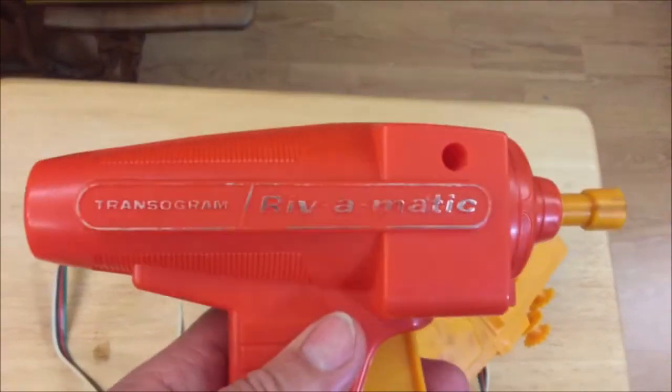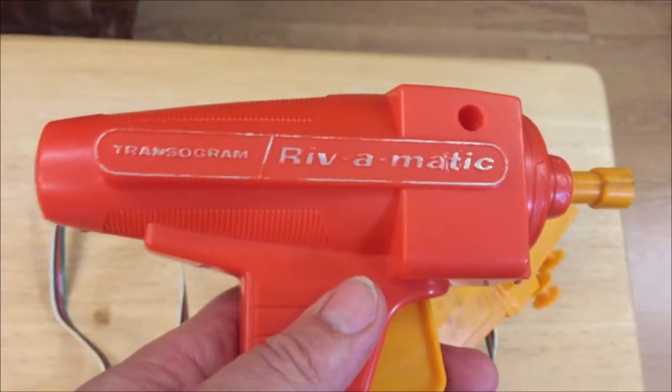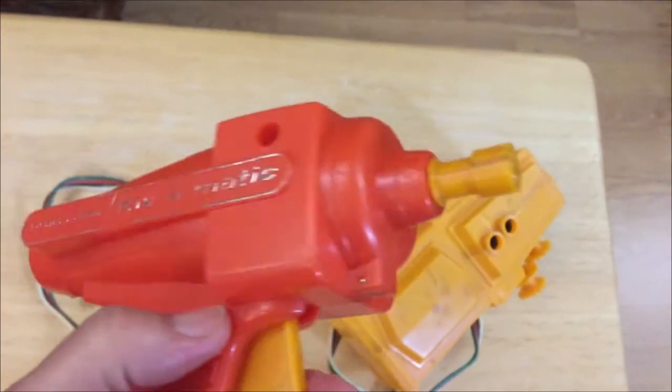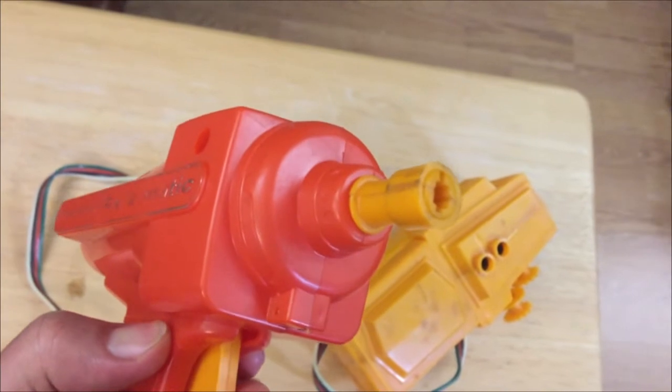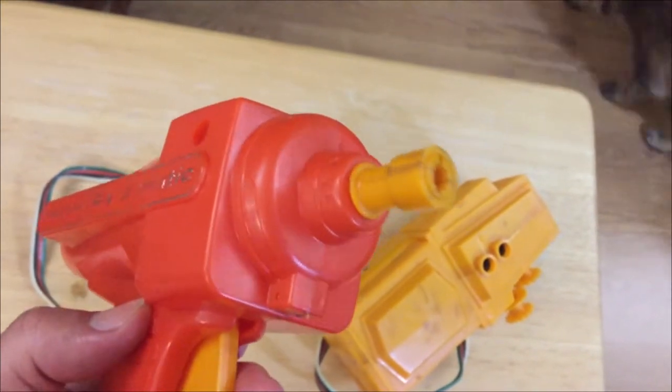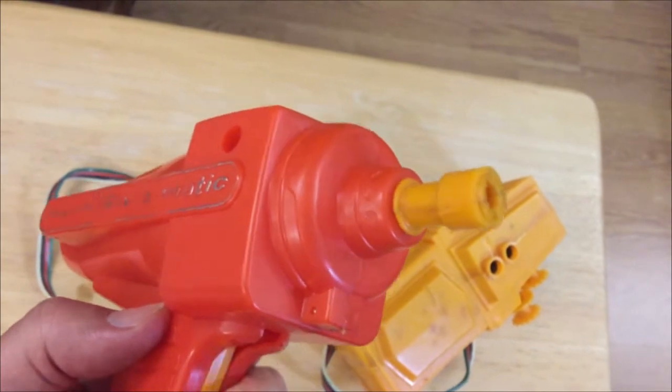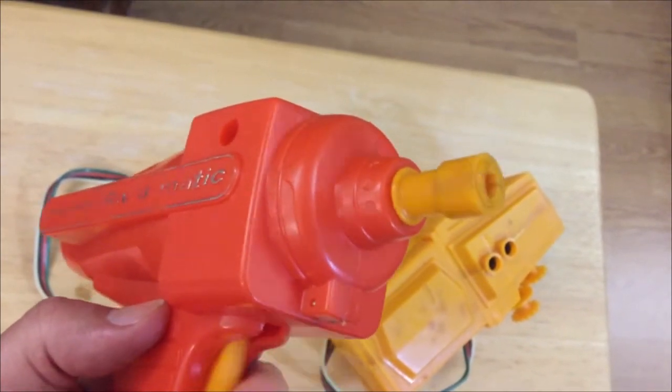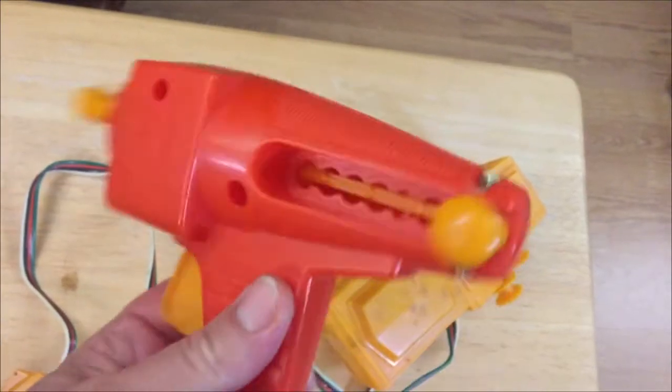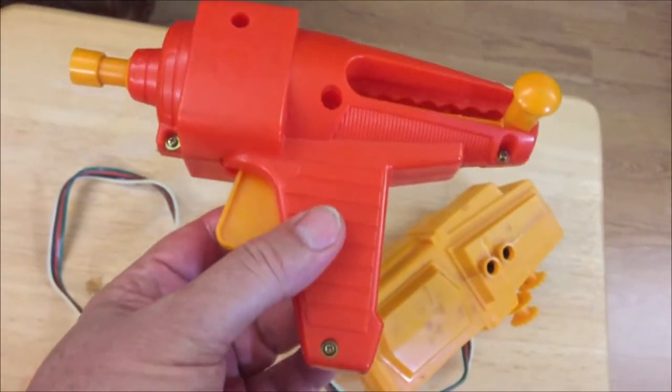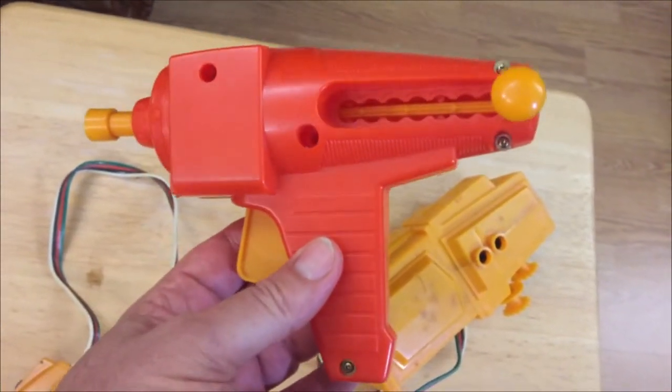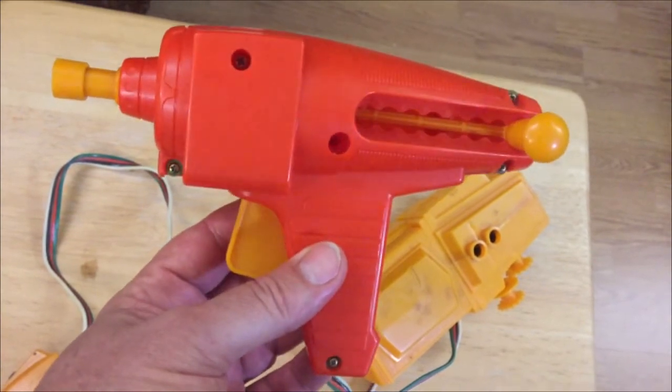Here is the Transogram Rivomatic. Now, put little plastic screws inside here and then you put that to turn it and you can assemble your projects. This has new screws in it. When I got this, it didn't have any screws in it.